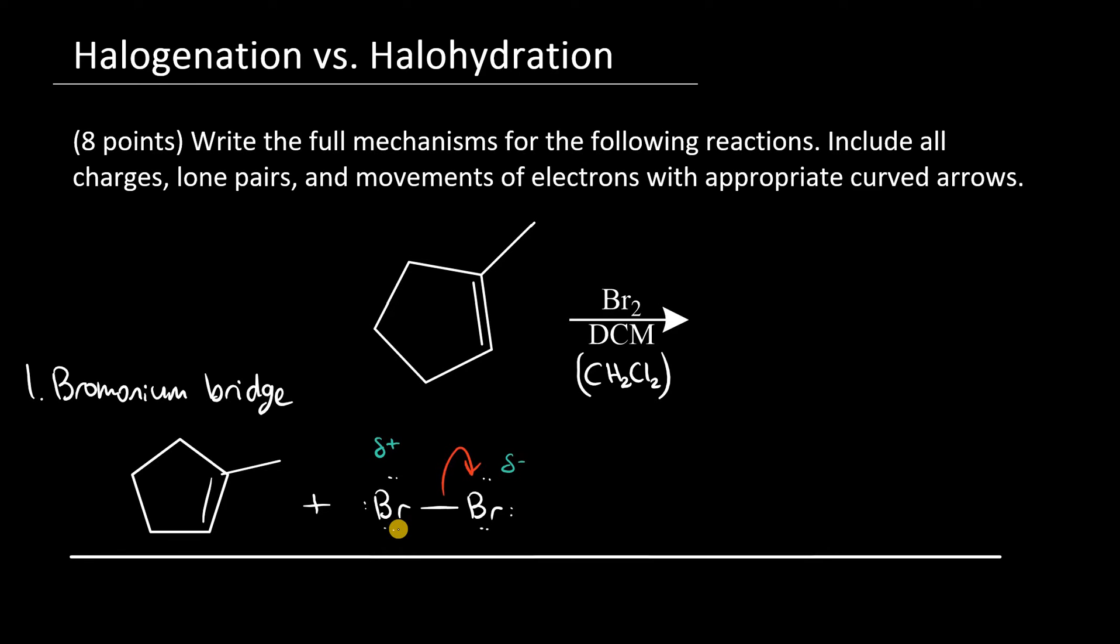If electrons flow from the pi bond to that bromine and back to the pi system, we can form that bridge. So in this case, I'll form the bridge on a wedge, but it could form on a dash as well.